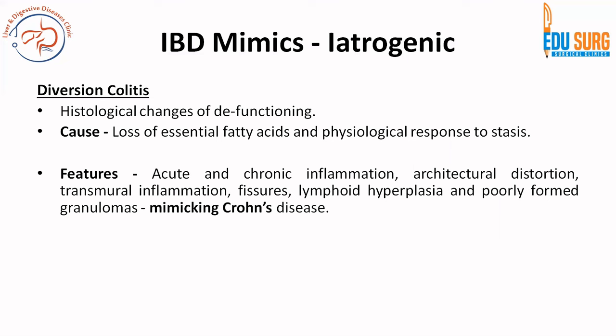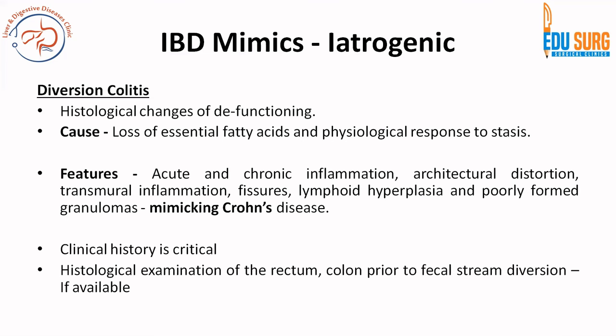There can be fissures, lymphoid hyperplasia, and poorly formed granulomas. So all these features with transmural inflammation and granulomas can mimic Crohn's disease. What is critical is to take proper clinical history and examine samples prior to starting treatment or prior to fecal stream diversion. If you have biopsies of the colon before the stoma was created, histological examination of the rectum and colon prior to fecal stream diversion can help in ruling out diversion colitis.